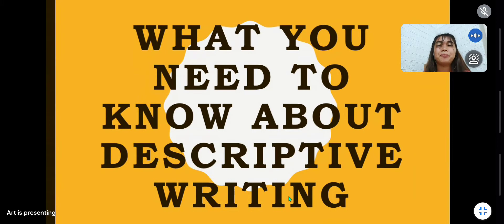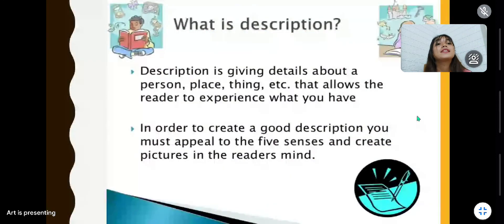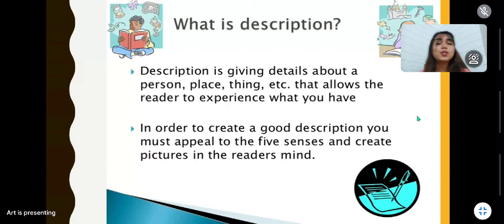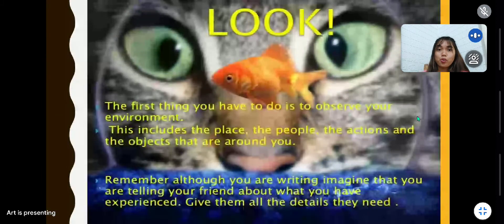Let us start now. What is description or what is descriptive writing? So description is giving details about a person, a place, thing, etc. that allows the reader to experience what they have. In order to create a good description, you must appeal as a writer. You must appeal to the five senses and create pictures in the reader's mind.